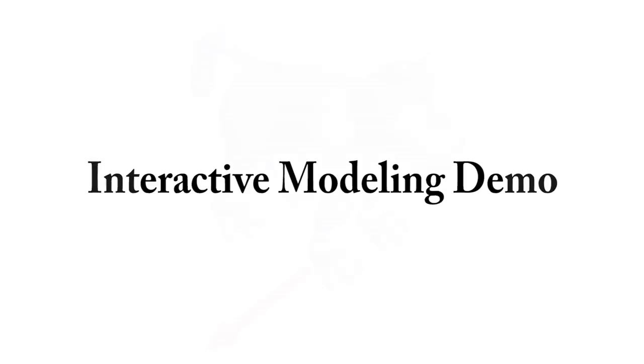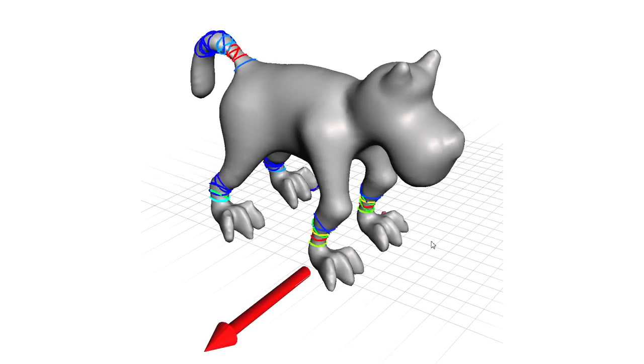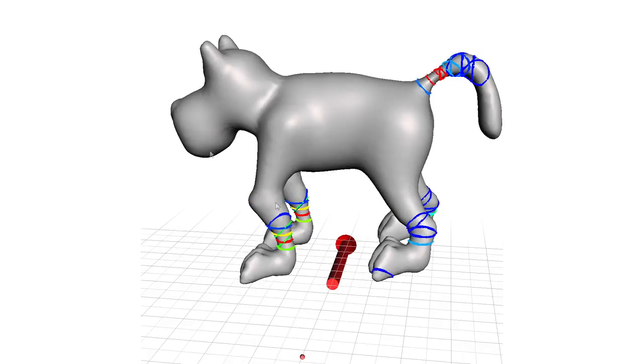This example shows a visualization of the weak sections of the model identified by our algorithm, indicated by the color map from red to blue. As one would expect, the thin region on the tail is identified as the weakest section. The red arrow shows the optimal up direction for 3D printing.